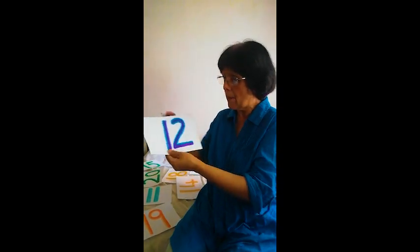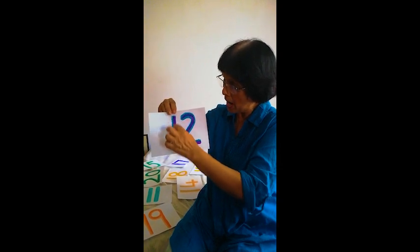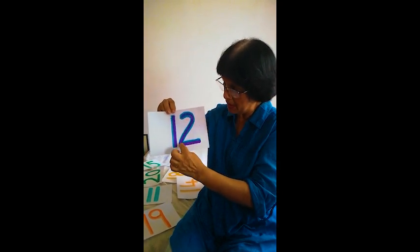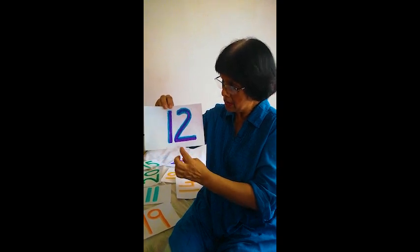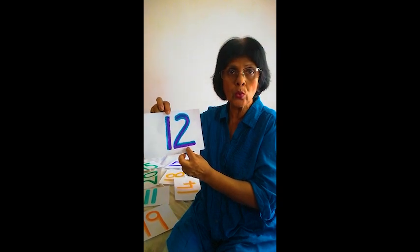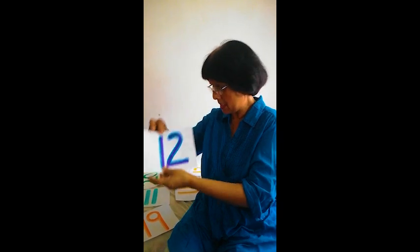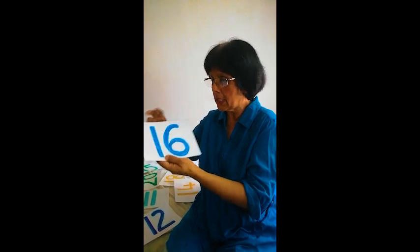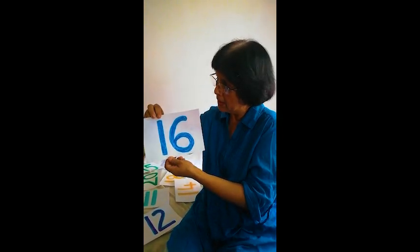Nineteen — this is number nineteen. Now here another number: number one and number two. One and two — we call this number twelve. Twelve: one, two — twelve.